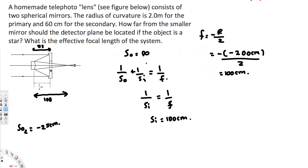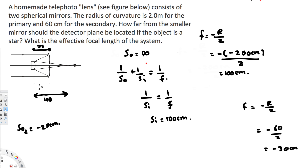For the secondary mirror, the radius of curvature is given as 60 centimeters. Using the same formula, f equals negative R over 2, we get f equals negative 60 divided by 2, which gives us a focal length of negative 30 centimeters.